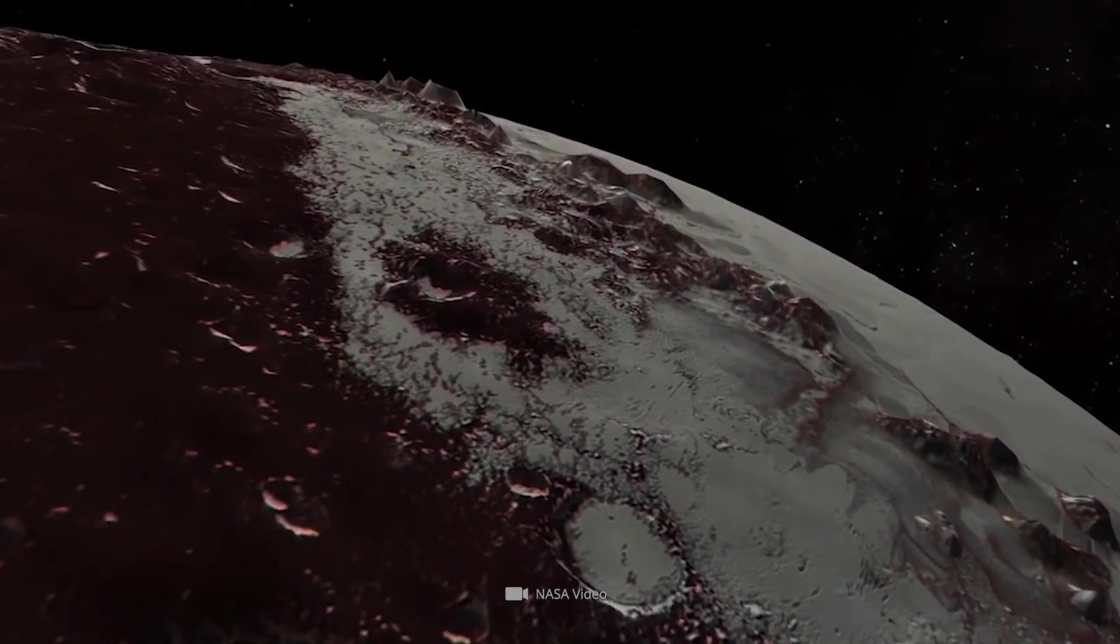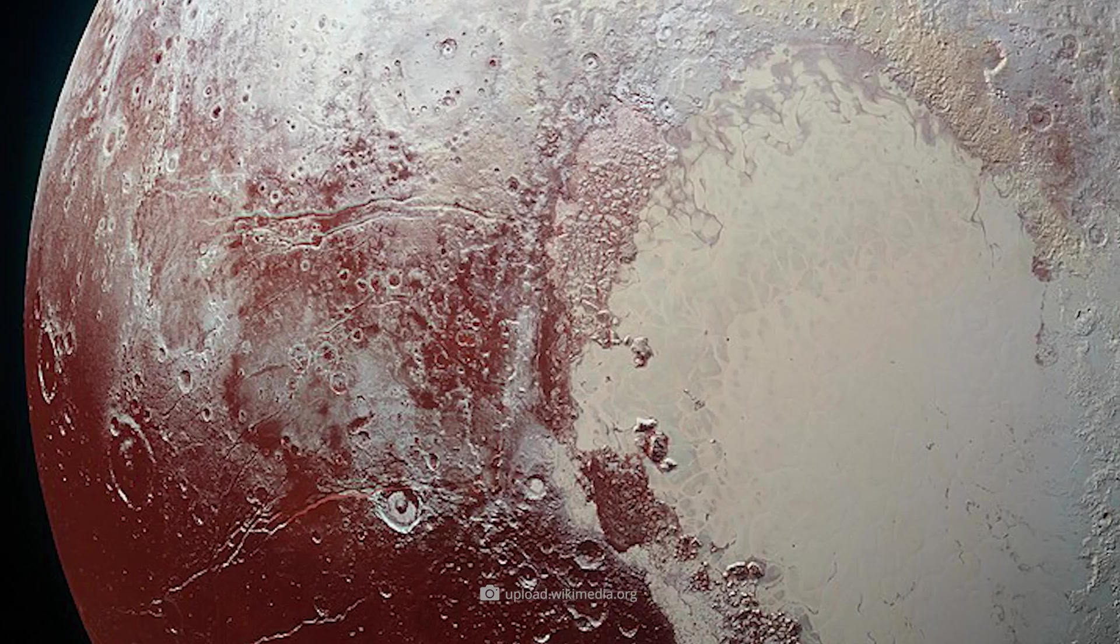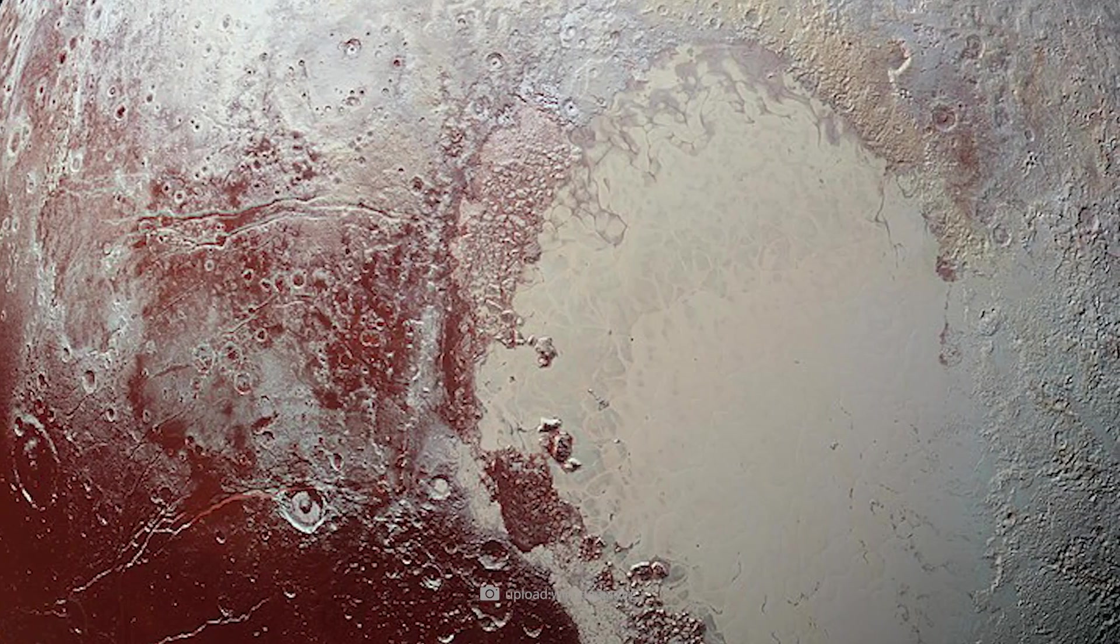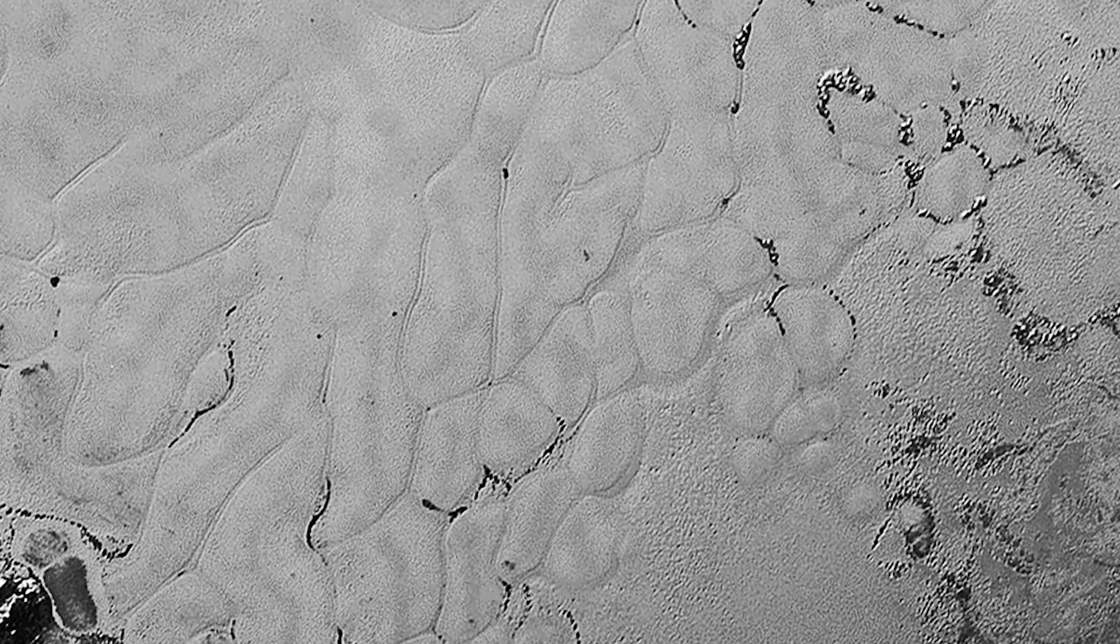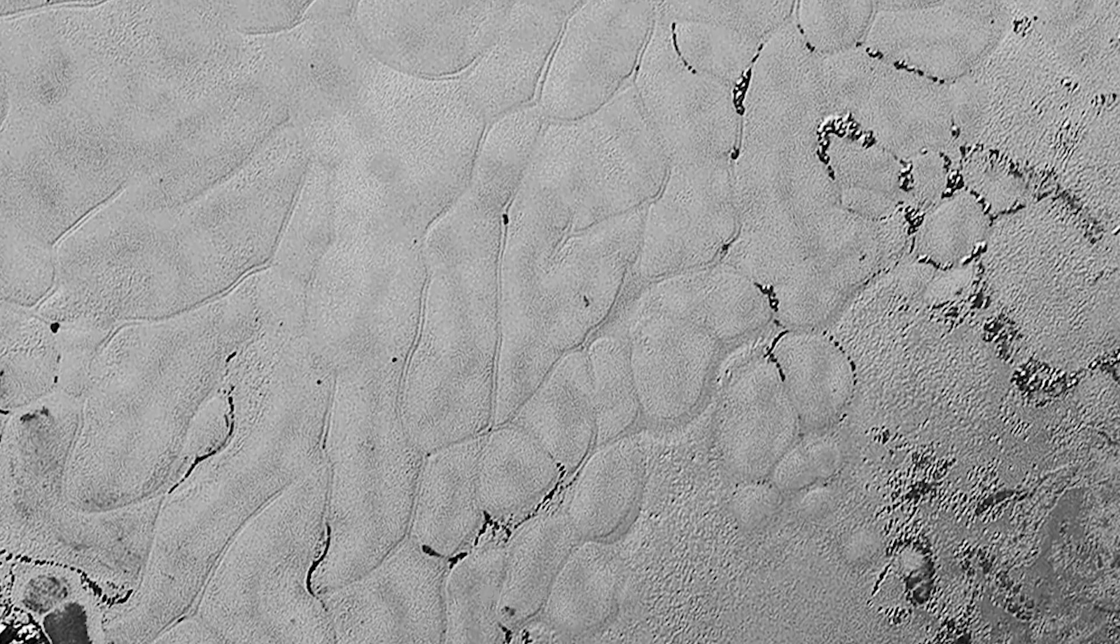Pluto is also known for its strange surface features, including the famous heart shape on its surface, which is a huge accumulation of ice. Moreover, researchers suspect that ice volcanoes are present on the dwarf planet.